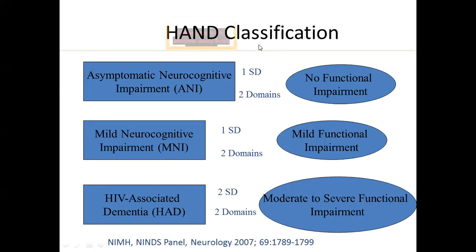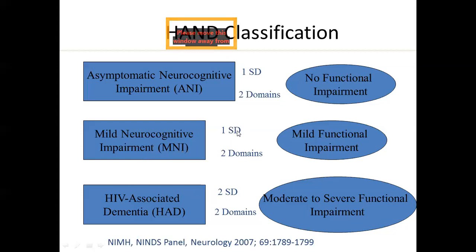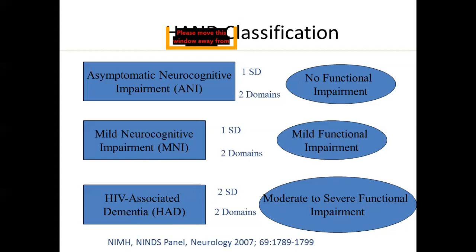The HAND classification at a glance: in asymptomatic neurocognitive impairment there is a deviation of one standard deviation in at least two domains but no functional impairment. In mild neurocognitive impairment there is again one standard deviation deviation in at least two domains but with mild functional impairment. In HIV associated dementia there is a two standard deviation deviation in at least two domains and the functional impairment is moderate to severe.